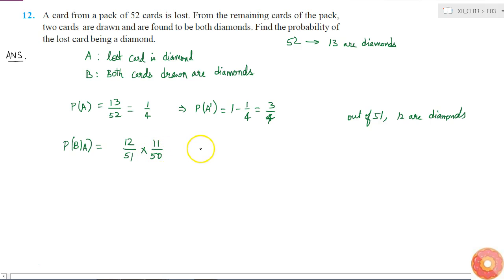What will be the probability of B if the lost card is not a diamond? That is probability of B given A complement. In this case, out of 51, 13 are diamonds because the lost card is not a diamond. So this will be equal to 13 by 51 is the probability of drawing a diamond in the first card, and for the second card it will be 12 by 50.